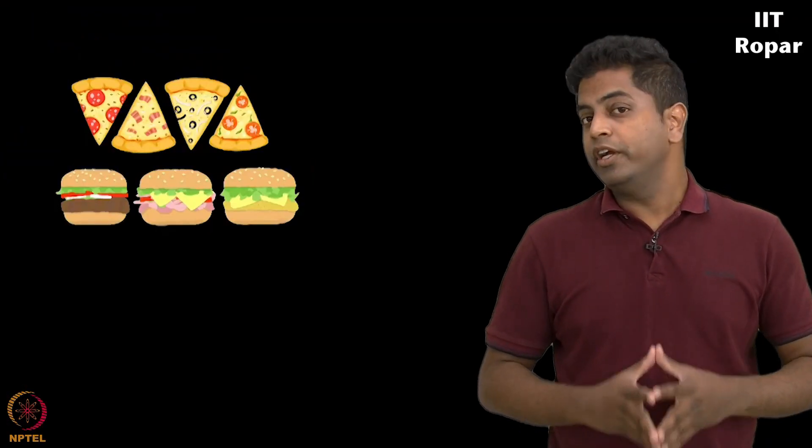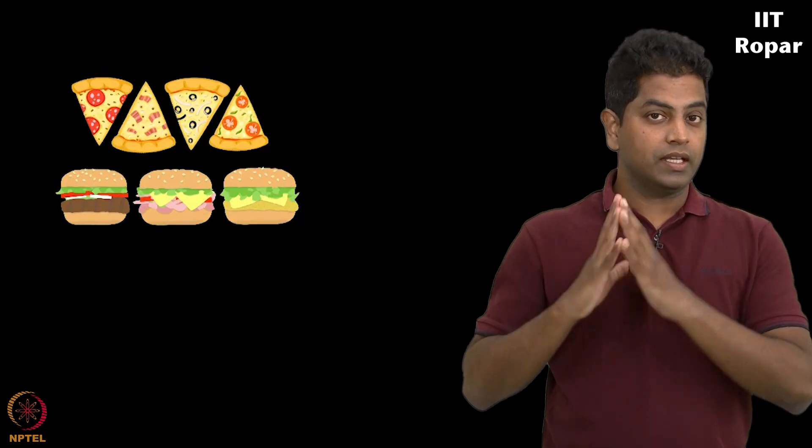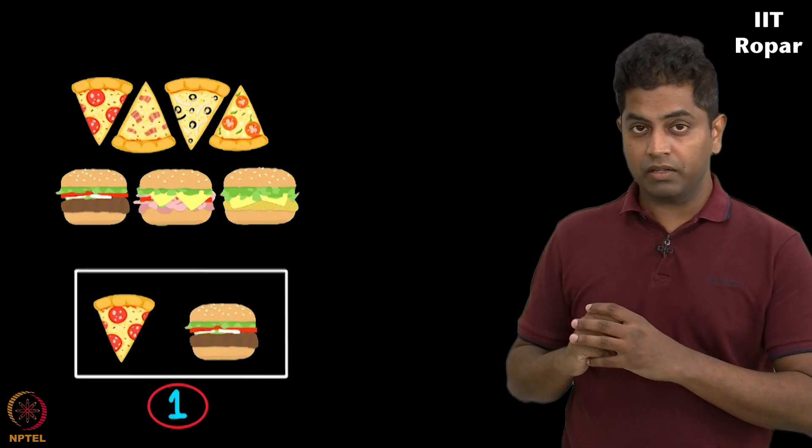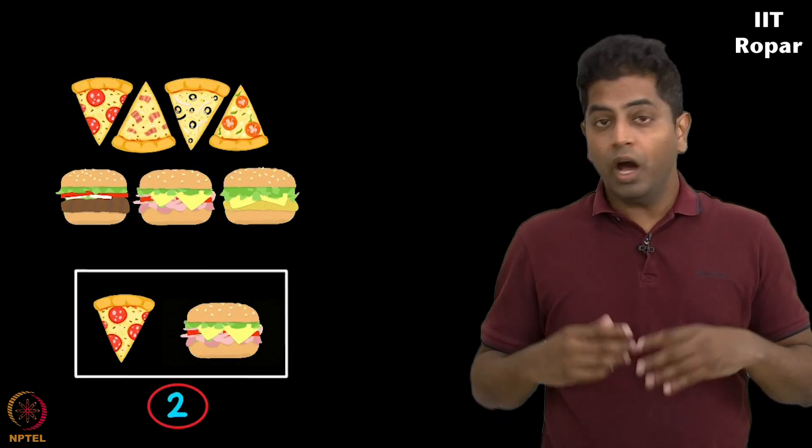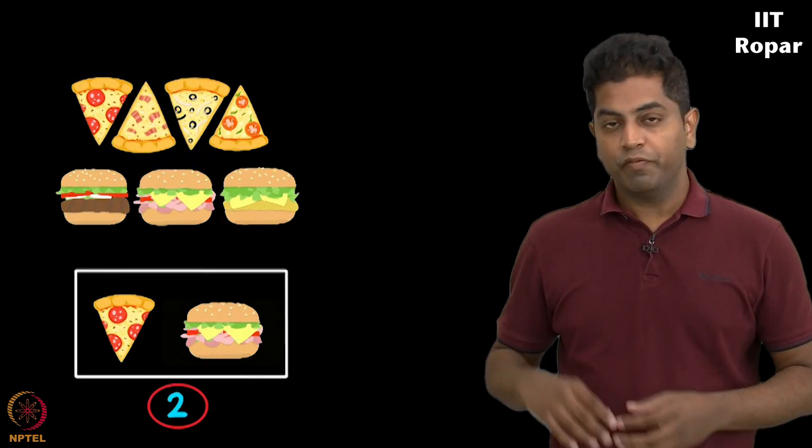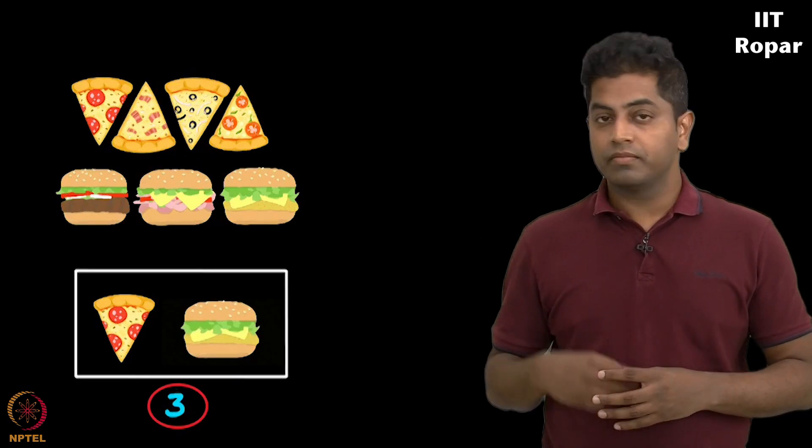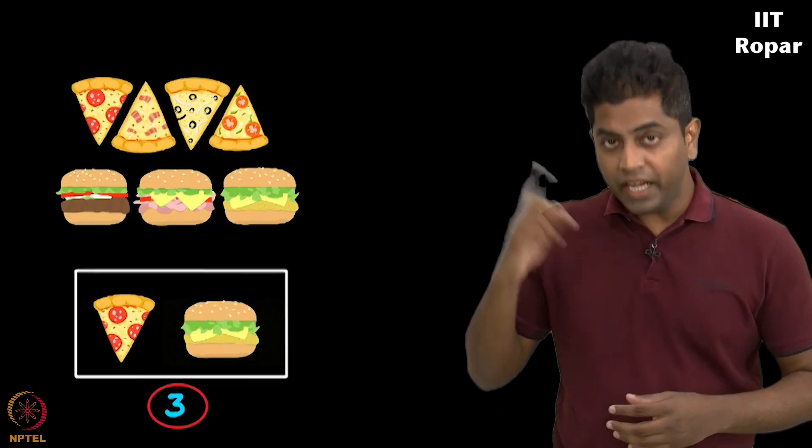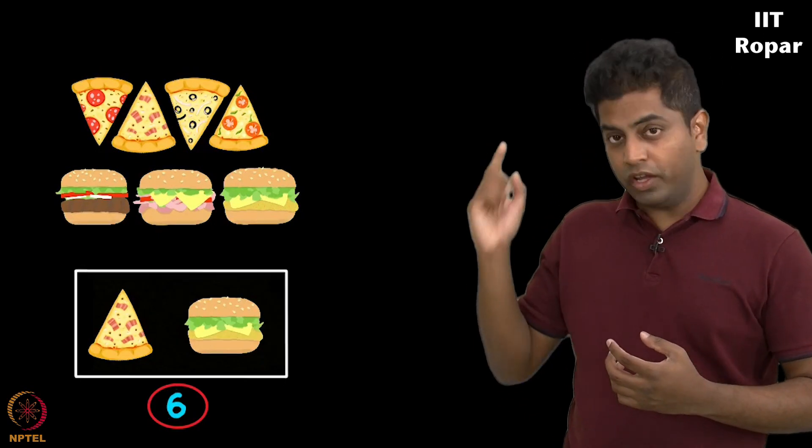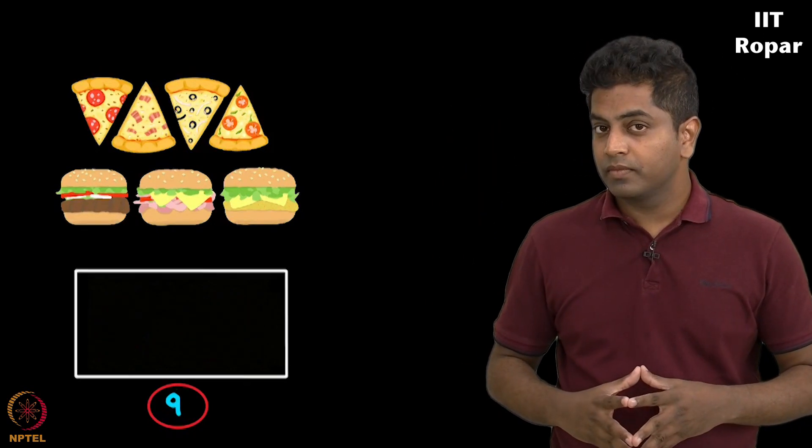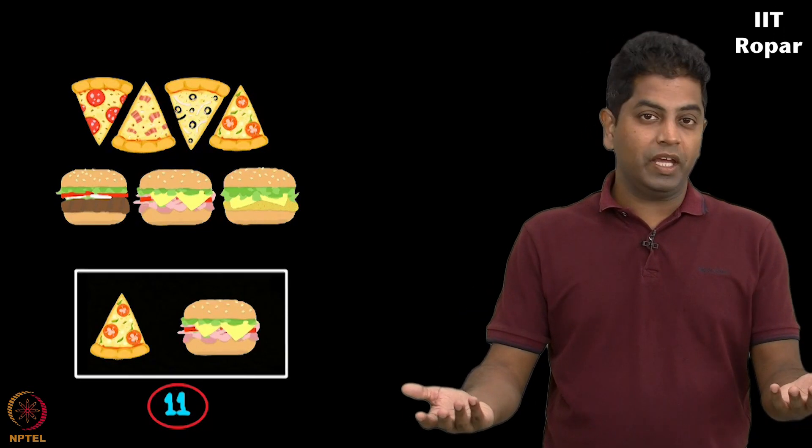It is going to be the following: first pizza with first burger, one order. First pizza with second burger, a possible second option. First pizza and third burger, third option. Second pizza with first burger. Second pizza with second burger, and so on and so forth. So in how many ways can I make my order?